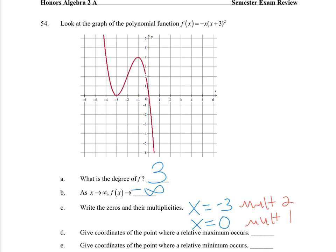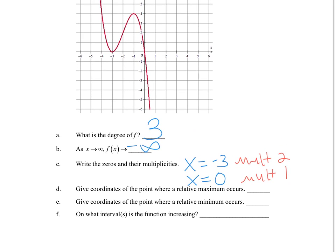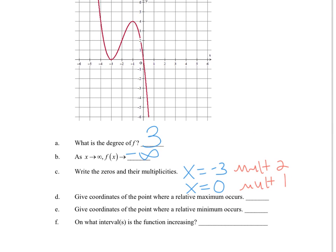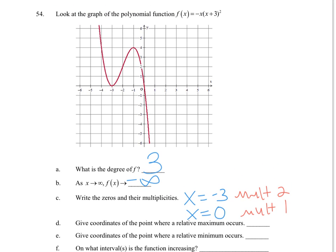You can see there's two zeros at -3 and just the one at zero. Give the coordinates where a relative maximum occurs. Looking at our graph, here's the maximum. That is at (-1, 4). Our minimum, a relative minimum, is here at (-3, 0).